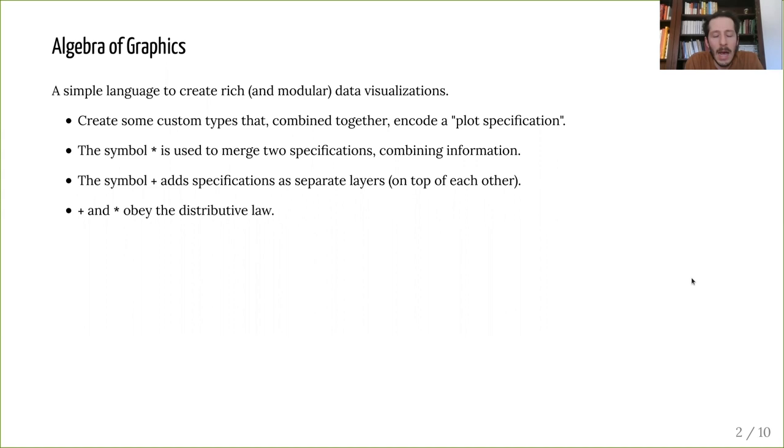The overall plan is to start with a set of custom types that, when combined together, would encode the specification of your plot. Given two of these specifications, you can either merge them together, combining information using the times operation, or you can use plus to add them as separate layers, to be plotted one on top of each other.